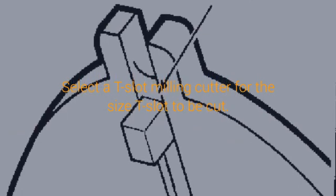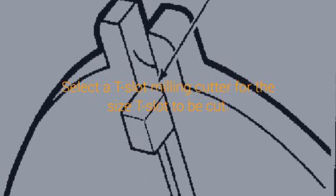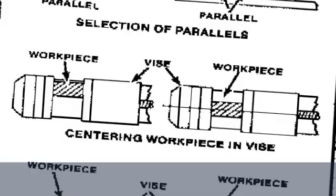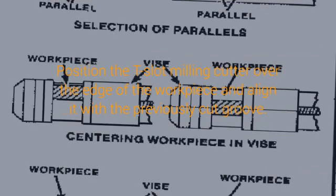Knee type mills are characterized by a vertically adjustable work table resting on a saddle which is supported by a knee. The knee is a massive casting that rides vertically on the milling machine column and can be clamped rigidly to the column in a position where the milling head and spindle are properly adjusted vertically for operation.